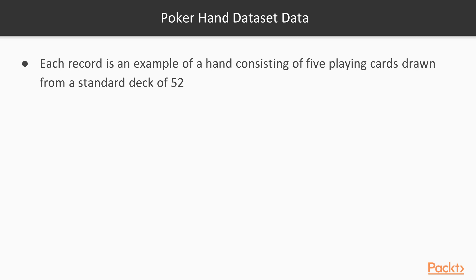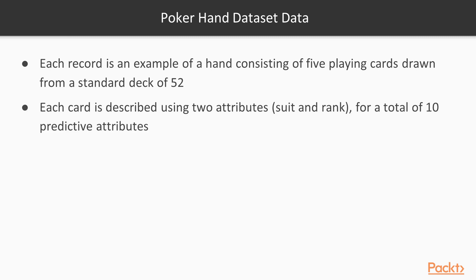This dataset basically contains simple data. Each record of this dataset is an example of a poker hand consisting of five playing cards drawn from a standard deck of 52 cards. Each card is described using two attributes — suit and rank — for a total of 10 predictor attributes. Since in poker we are always dealing five cards per hand, every card is described using two features: one to describe the suit and the other to describe the rank.